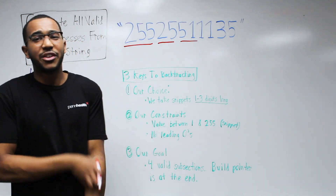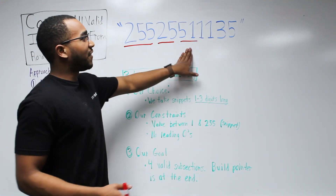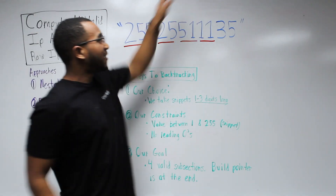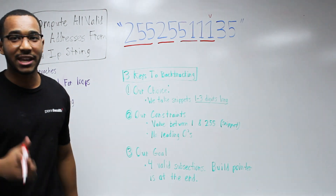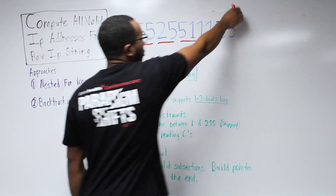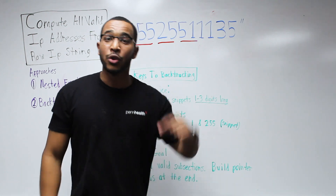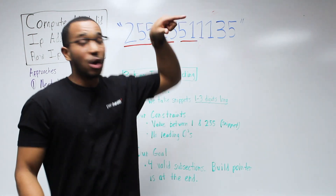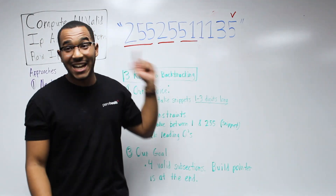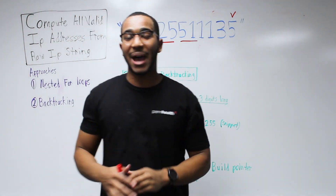This is how backtracking exhausts possibilities. We take snapshots of the string within our constraints. When our build pointer is at the end of the string and we have four subsections, we know we're finished. So if we've taken snippets but haven't advanced the full length of the string, or haven't reached four subsections, we backtrack. The build pointer tells us where we are in our construction — when it reaches the end with four segments, we have a valid decomposition.